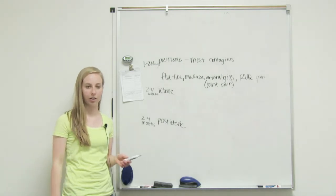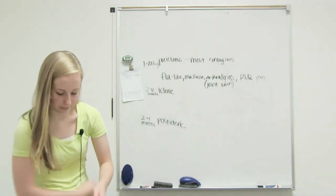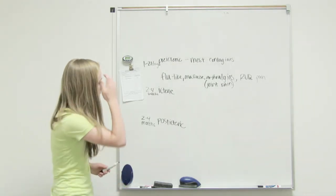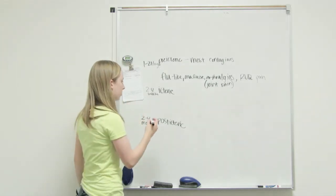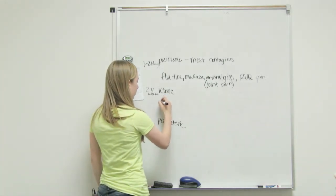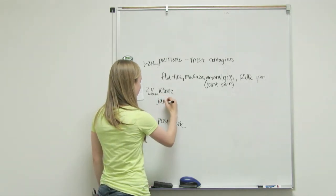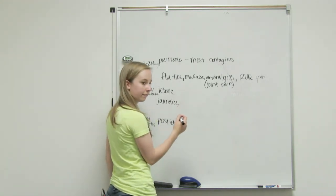What about icteric? So this is where you start having the liver symptoms. Jaundice and the bilirubin in the urine. Good, so what's my urine going to look like with the bilirubin in it? Good.